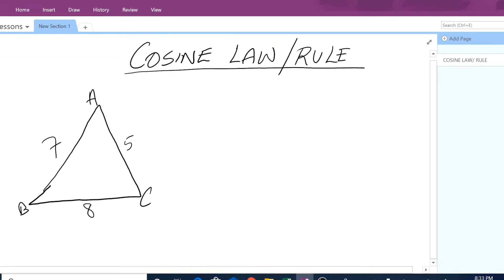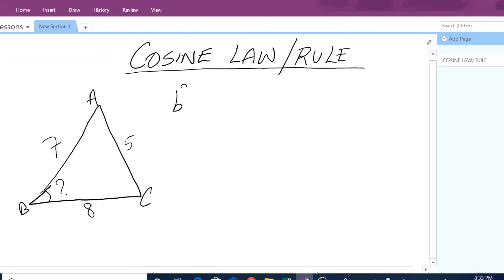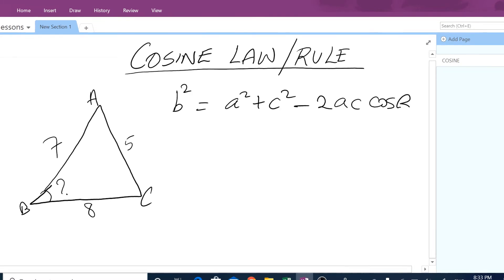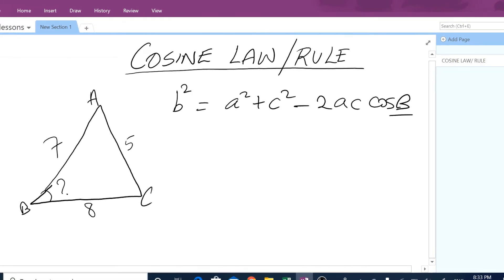you can use cosine rule. Because the formula for cosine rule is such that, say for example we want to find angle B, so then you have to say b squared equals a squared plus c squared minus 2 times a times c, cos of B. The side you are looking for, its angle always goes there.